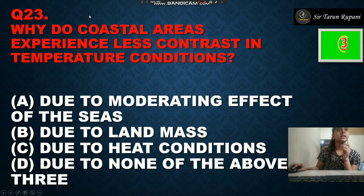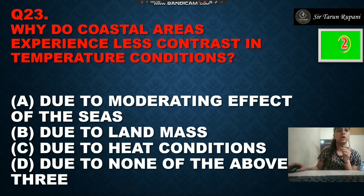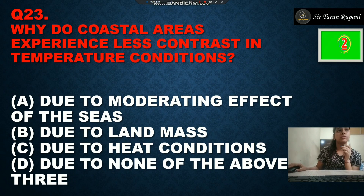Question 23: why do coastal areas experience less contrast in temperature conditions? Option A is due to the moderating effect of the seas, option B is due to land mass, option C is due to heat conditions, and option D is none of the above. The correct answer is option A, due to the moderating effect of the seas.